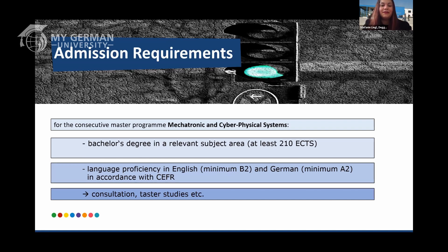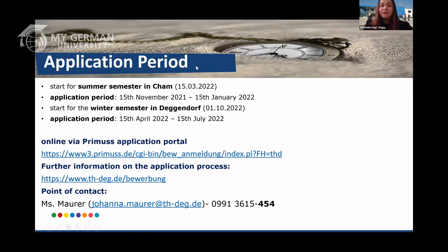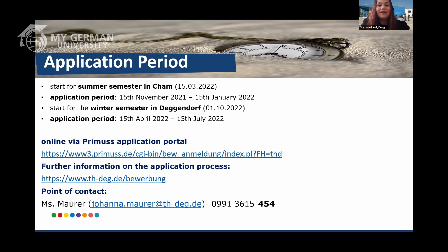We also offer consultation sessions and taster studies. The program runs at two locations: the summer semester always starts in Cham, with applications open from November 15th to January 15th; the winter semester runs in Deggendorf, with applications from April 15th to July 15th. You apply entirely online — no documents need to be mailed. You upload your CV, motivation letter, transcript of records, and similar materials. Miss Maria is your primary point of contact for any application questions.